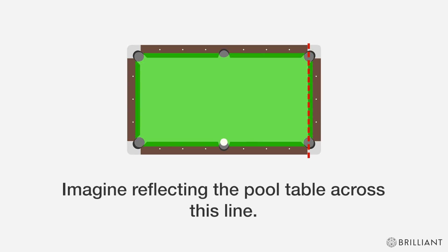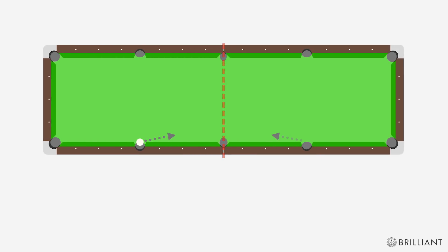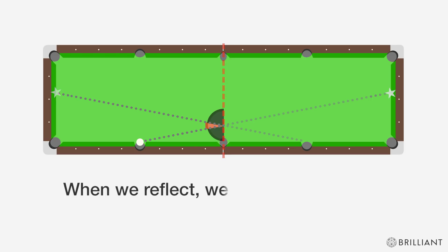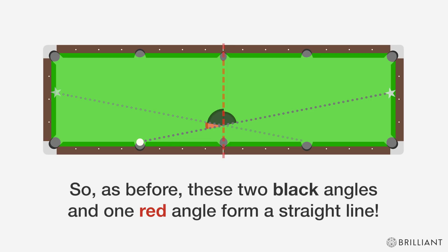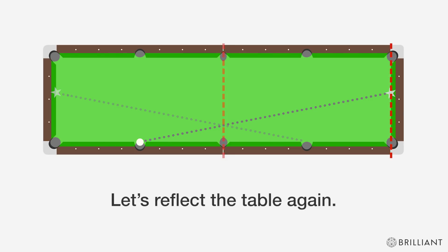Imagine reflecting the pool table across this line. The two black angles and one red angle here form a straight line, and when we reflect, we create an identical black angle here. So as before, these two black angles and one red angle form a straight line. So we can project the ball traveling through its reflection in a straight line.